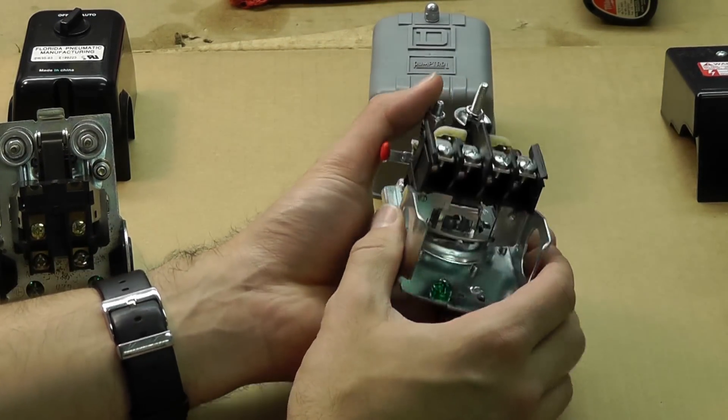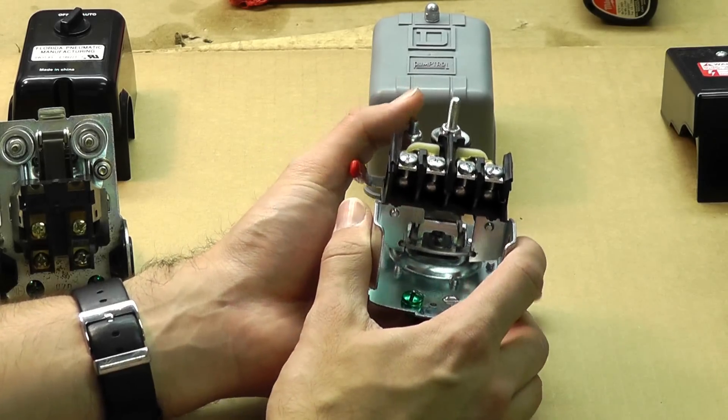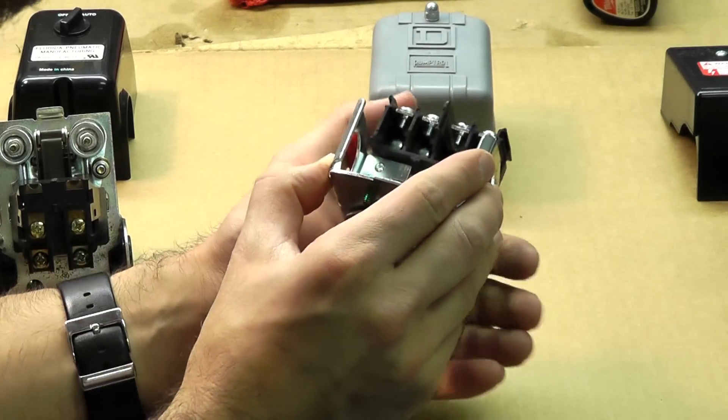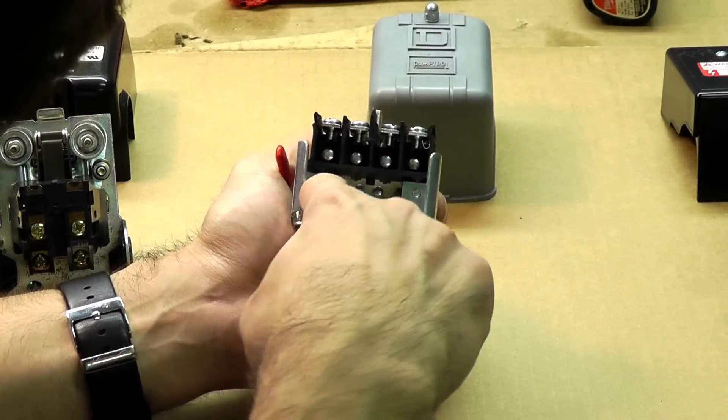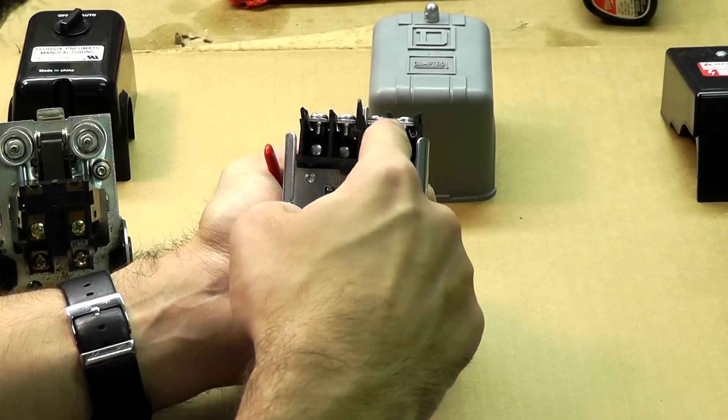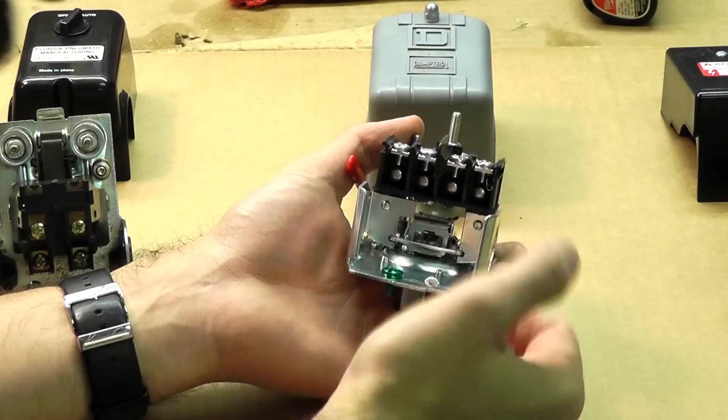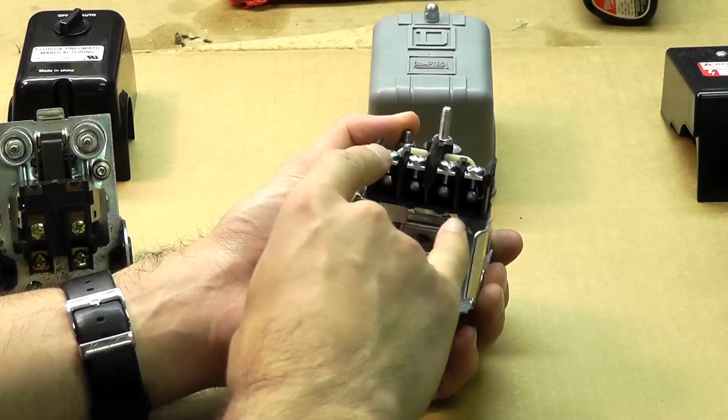As far as wiring is concerned on Square D, it may not be exactly clearly marked for line and motor. Line is your power cord and motor obviously your motor cord. On this particular switch it's very hard to see, but you do have notations here on the terminal block: one, two, three, four.